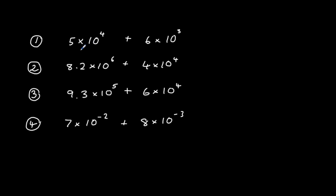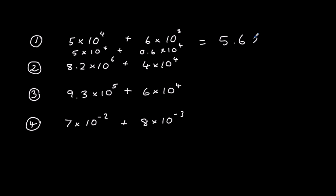Firstly we've got 5 times 10 to the power of 4, plus 6 times 10 to the power of 3. Using the method of making the powers the same, this becomes 0.6 times 10 to the power of 4. So 5 plus 0.6 gives us 5.6 times 10 to the power of 4.